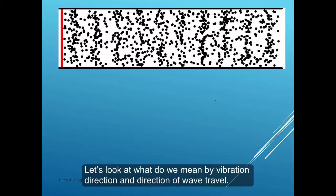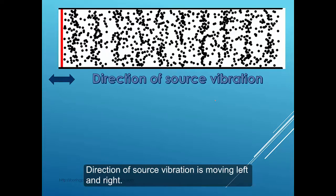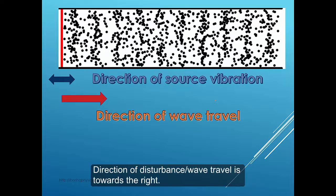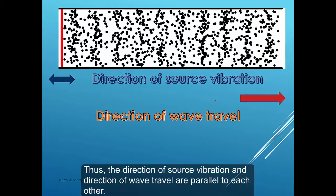Let's look at what we mean by vibration direction and the direction of wave travel. Direction of source vibration is moving left and right. Direction of disturbance of wave travel is towards the right. Another way to look at it is that you see the disturbance moving towards the right. Thus, the direction of the vibration source are travelling parallel to each other.